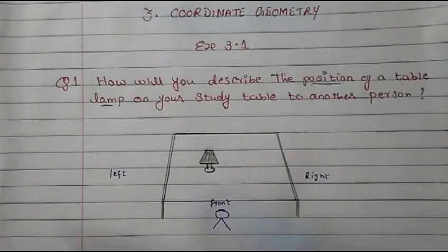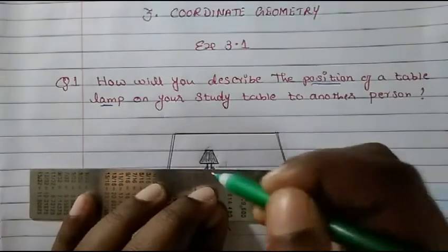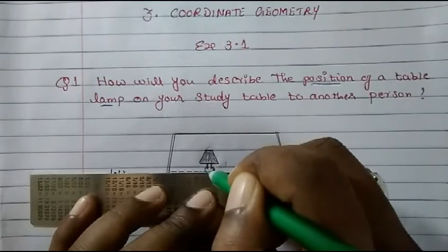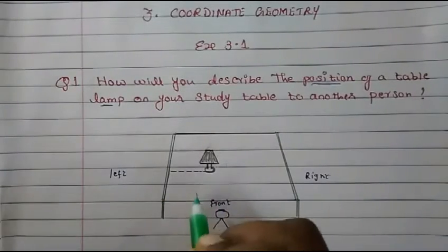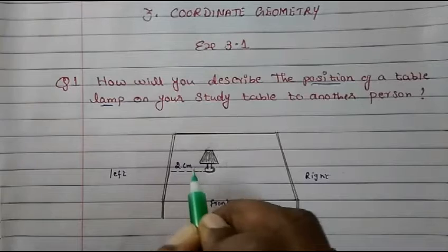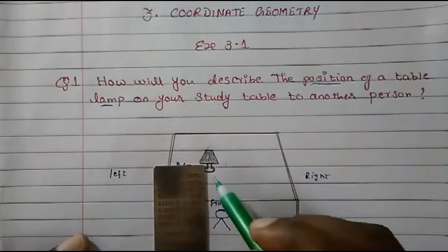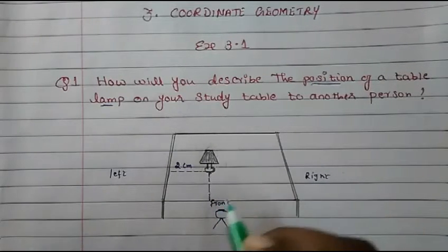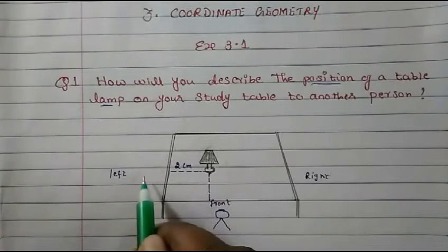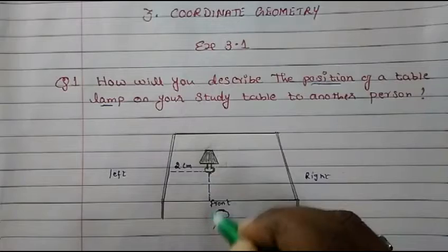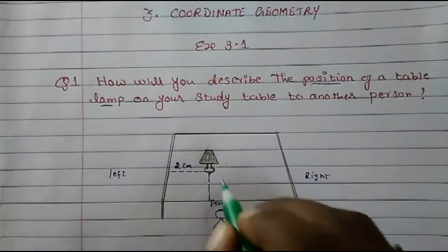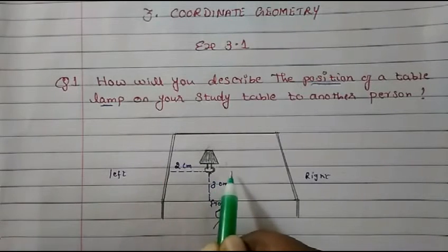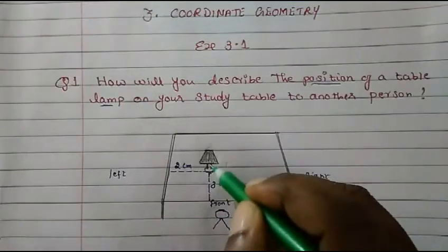Now what you will do is draw a line to the left direction. Consider this is two centimeters. Then on the front side, draw a perpendicular line. This horizontal line is two centimeters and the vertical distance is maybe three centimeters.